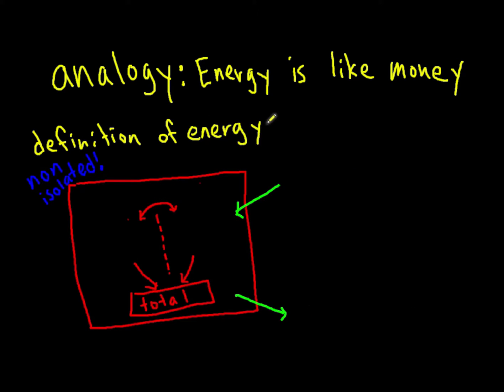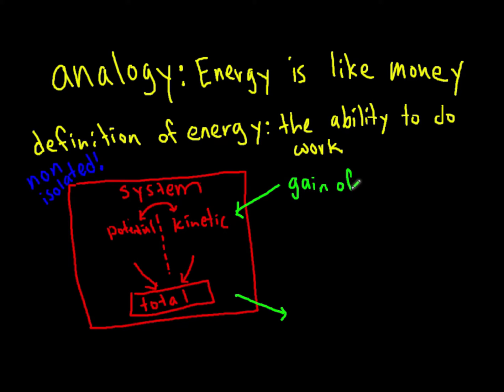We can also consider the same situation for energy. Energy is the ability to do work. It's not a great definition for energy, but defining it based on what it's used for helps us understand. Instead of a bank account, we're going to consider the idea of a system. A system is divided into its potential energy and its kinetic energy, which add to create your total energy. It's a non-isolated system, which means that you can have a gain of energy, which is positive energy added to the system.